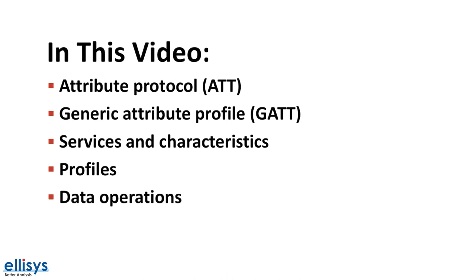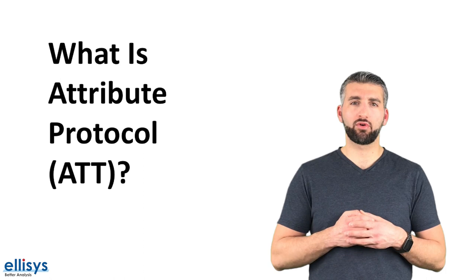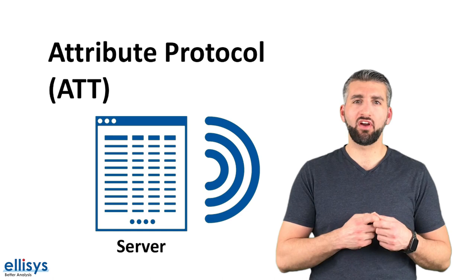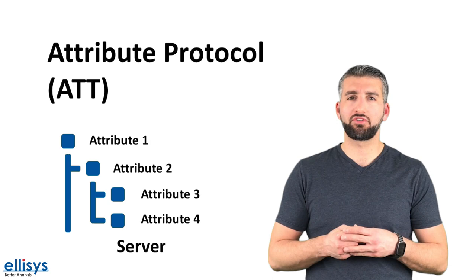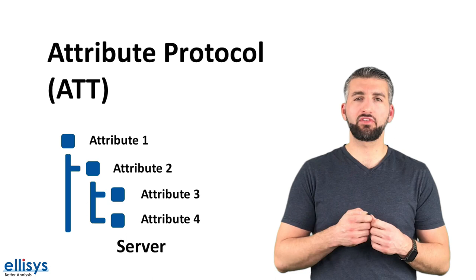To better understand what GATT is, we first need to understand the underlying framework or infrastructure for GATT, which is the attribute protocol. The attribute protocol defines how a server exposes its data to a client and how this data is structured within that server. The data is structured as attributes, and an attribute is simply the generic term for any data element that is exposed by the server.